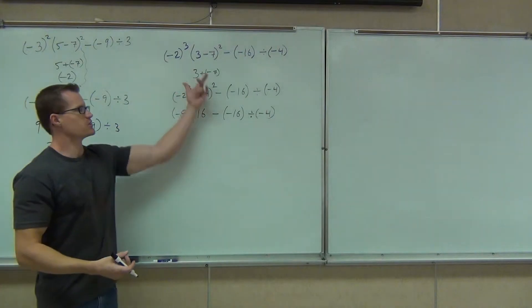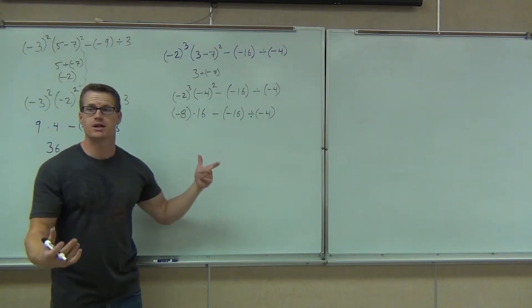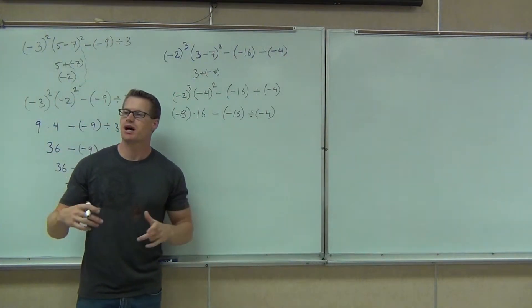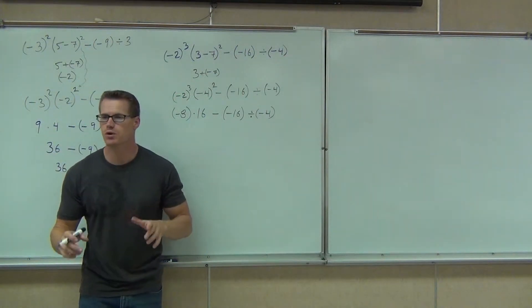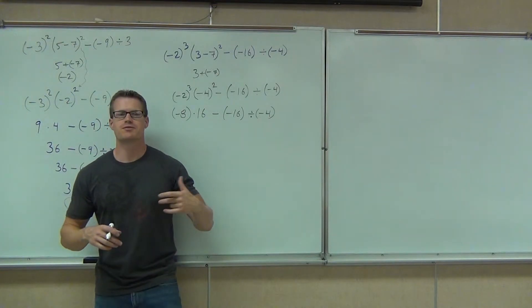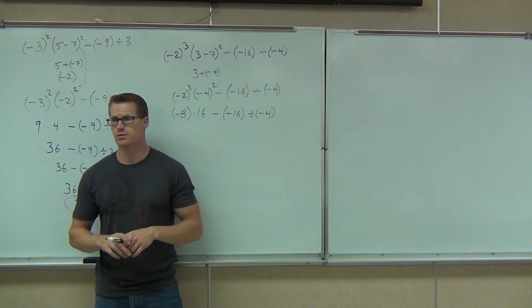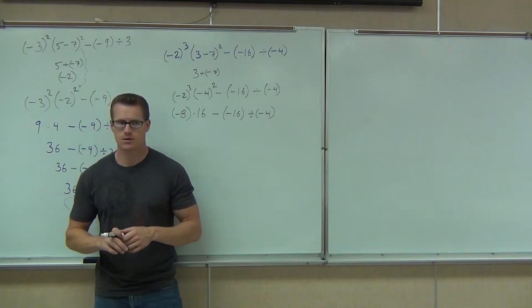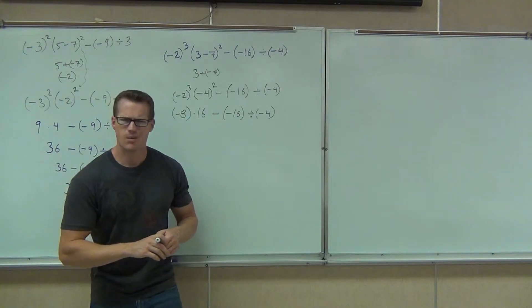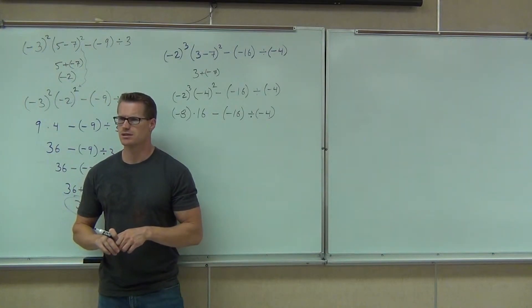So we've done our parentheses, no problem. We've done our exponents — we've got both of those done. Now is the time where we look for any multiplication or division. We're going to do it from left to right. So what's the first thing we do? 8 times 16.